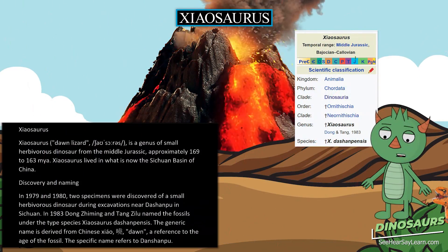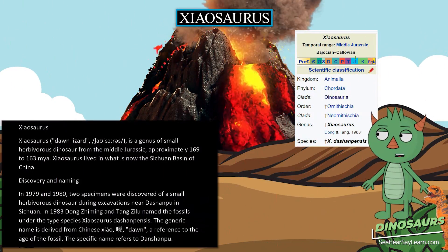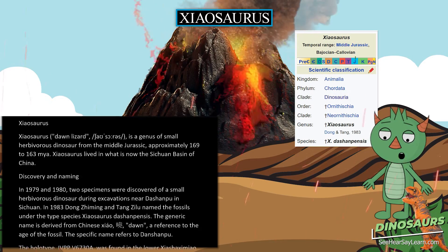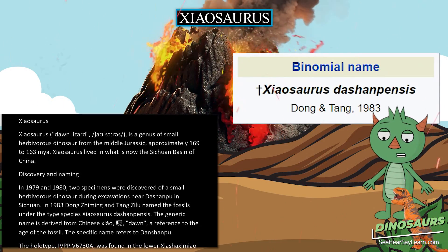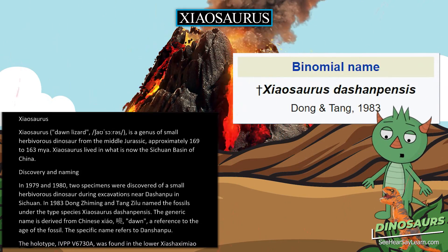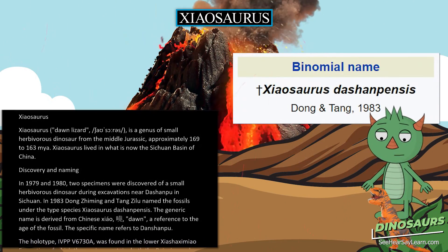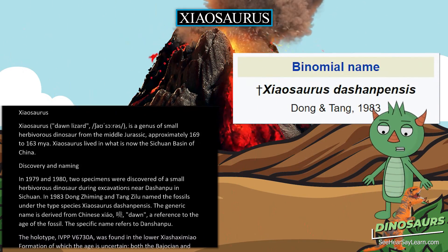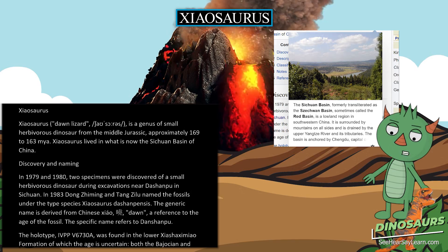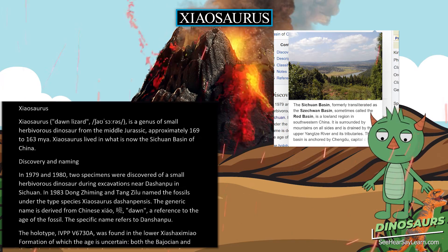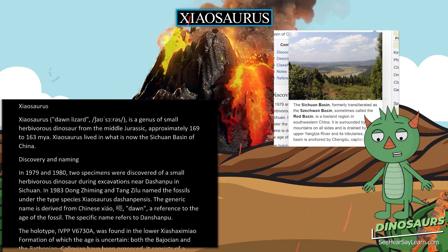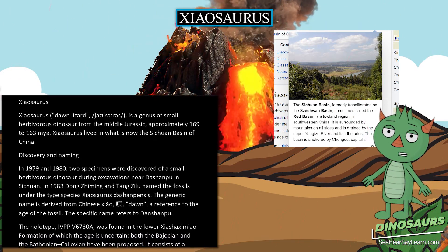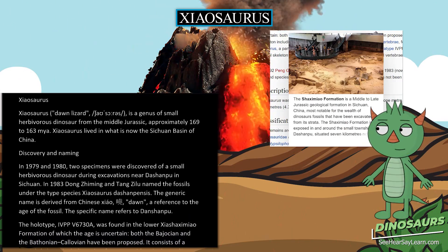Shiasaurus, meaning 'Don Lizard', is a genus of small herbivorous dinosaur from the Middle Jurassic, approximately 169 to 163 Mya. Shiasaurus lived in what is now the Sichuan Basin of China.